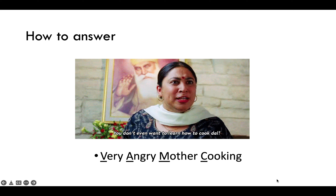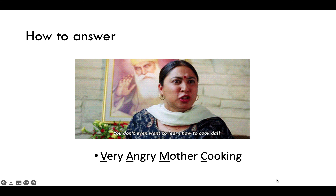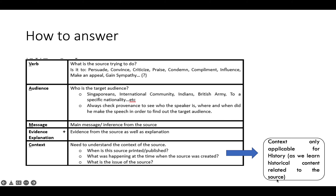So how do you answer in terms of structure? Think of this acronym: Very Angry Mother Cooking. V is verb — what is the source trying to do? Think of a strong verb or motif word. Some standard verbs to memorize are persuade, convince, and criticize. These are common verbs you can use for both Social Studies and History, so just keep them as a word bank.